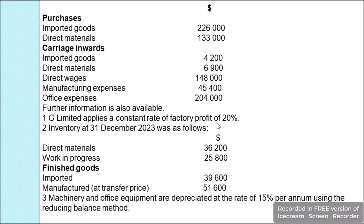Direct wages $148,000, manufacturing expenses $45,400, office expenses $204,000. Further information: G Limited applies a constant rate of factory profit of 20%. Inventory at 31 December 2023: direct materials $36,200, work in progress $25,800, finished goods imported $39,600, manufactured at transfer price $51,600.